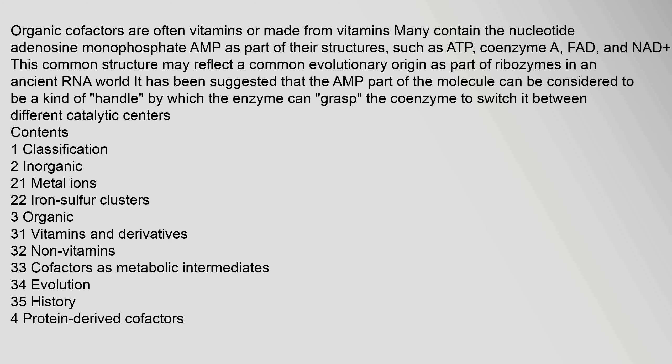Organic cofactors are often vitamins or made from vitamins. Many contain the nucleotide adenosine monophosphate (AMP) as part of their structures, such as ATP, coenzyme A, FAD, and NAD. This common structure may reflect a common evolutionary origin as part of ribozymes. In an ancient RNA world, it has been suggested that the AMP part of the molecule can be considered a kind of handle by which the enzyme can grasp the coenzyme.